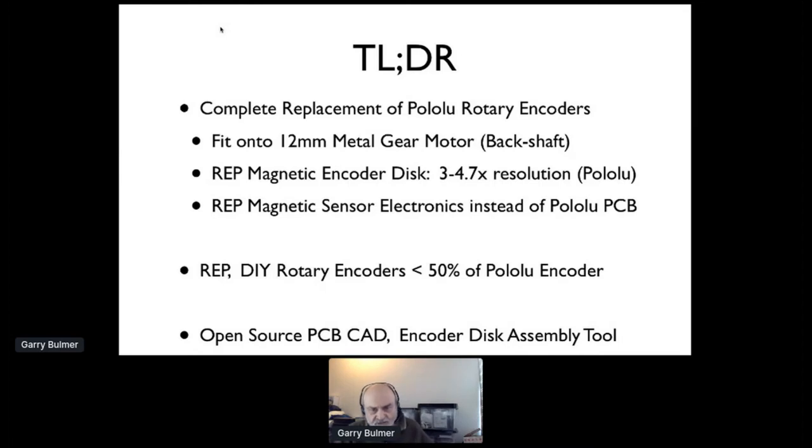The REP magnetic encoders give three to about four and two-thirds more resolution than Pololu but work with the Pololu encoder. The REP DIY encoder kit is about 50% of the cost of a Pololu encoder. Your free labor by DIYing it is paying the difference. There's open source PCB CAD, and because it's quite hard to make, Stephen's designed an encoder disk assembly tool.